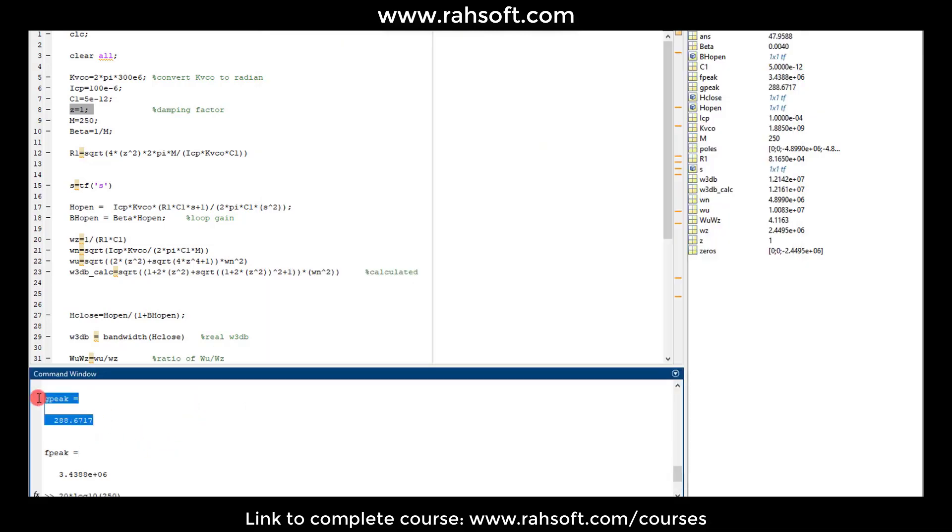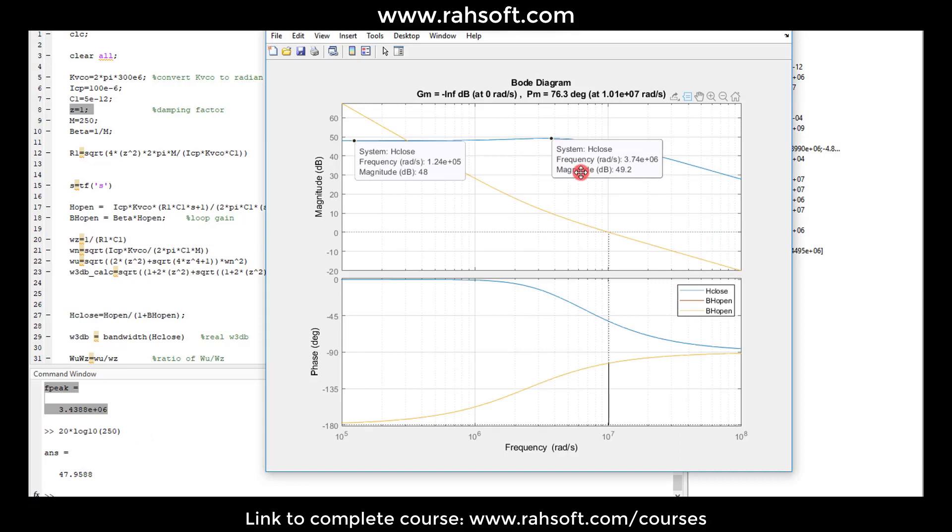And also I can check it here. If you see, the gain peak is 288. However, my M is 250. And F peak is basically the frequency that happens.